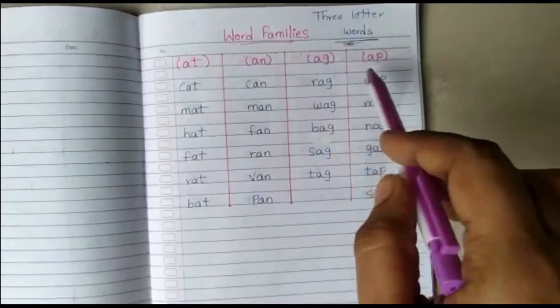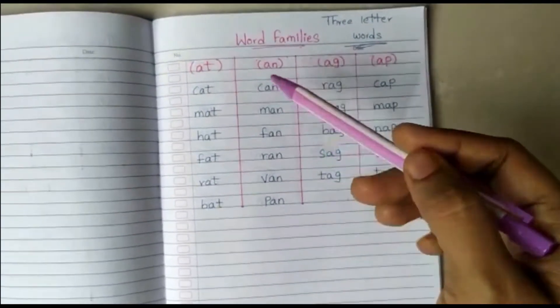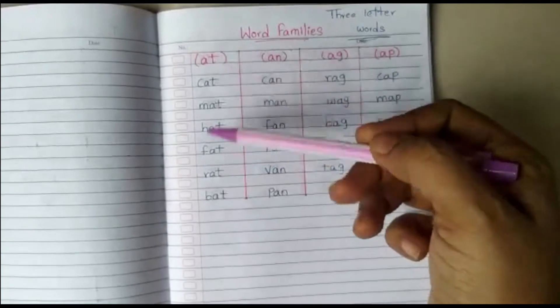These are three letter words grouped by word families. For example, in the first column, at words.